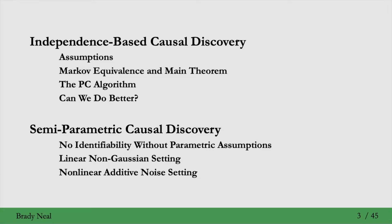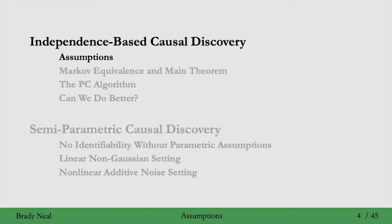Here's the outline of this lecture. There are two main categories of methods. The first is independence-based causal discovery, where we try to discover conditional independencies in the data and use those to infer the causal graph. The second is semi-parametric causal discovery, where we make some parametric assumptions about the functional form of how the data was generated and leverage those assumptions to do causal discovery. We always have a big focus on assumptions in this course.